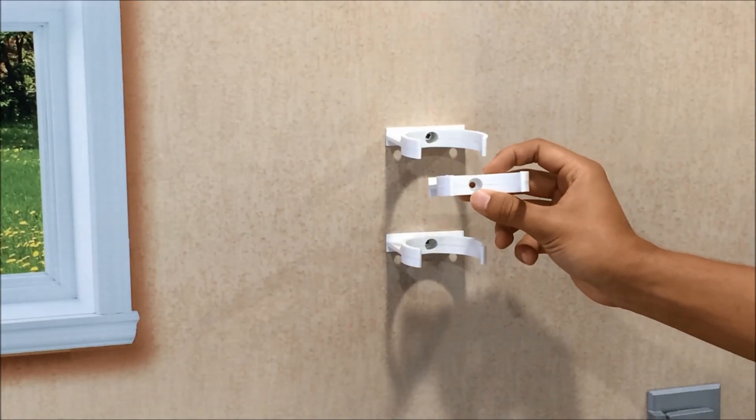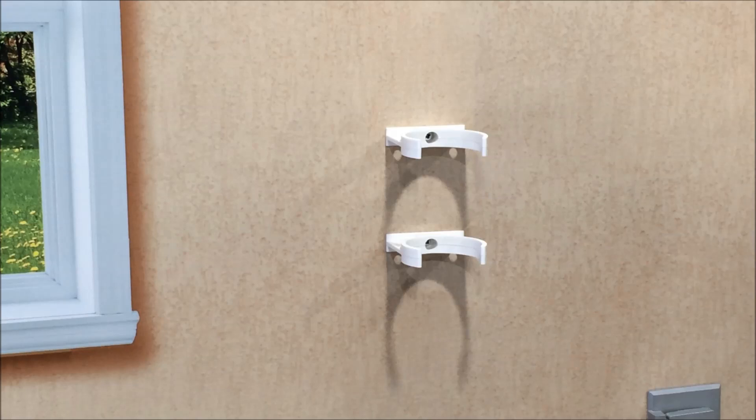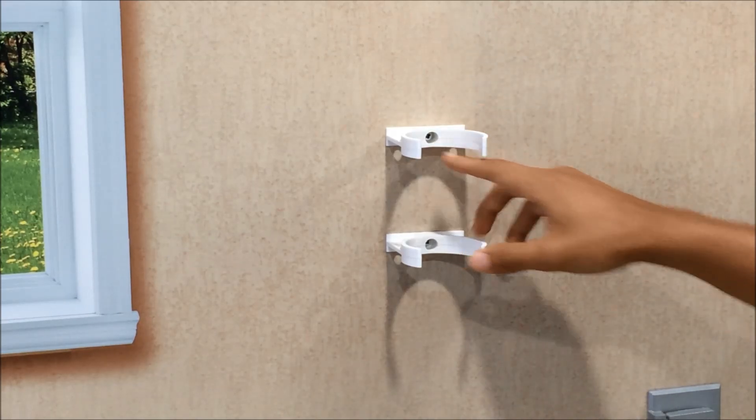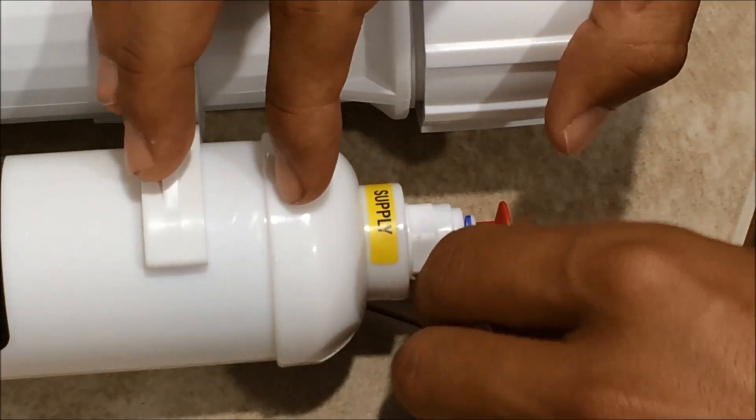The first thing you'll want to do is remove the wall mount brackets from your membrane housing and go ahead and mount them to the wall. Depending on the surface you may need to use different screws than the ones that have been supplied. Now you'll remove the shipping plugs.